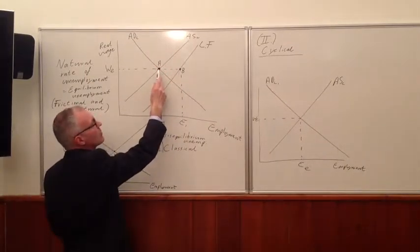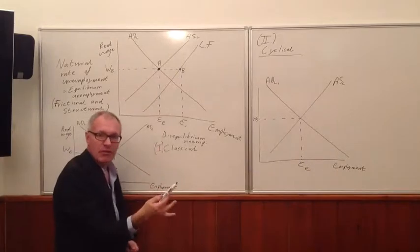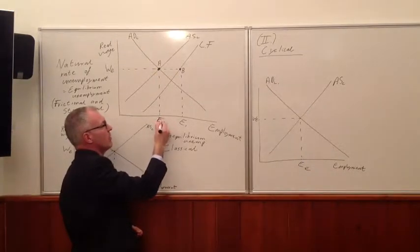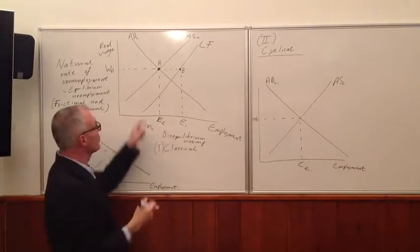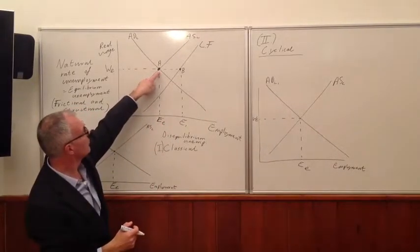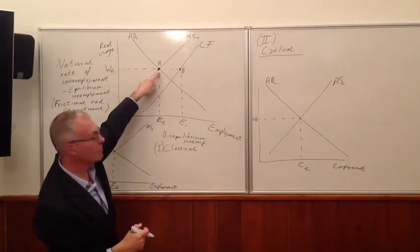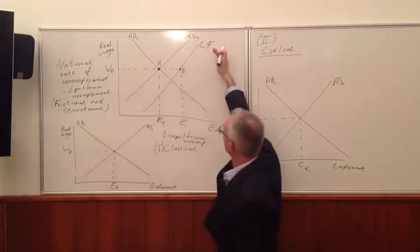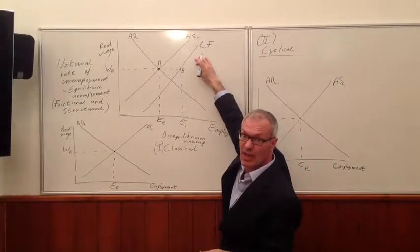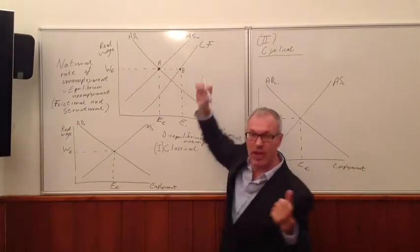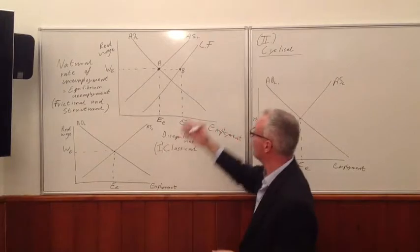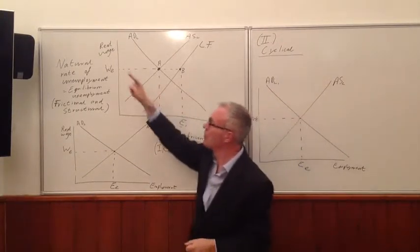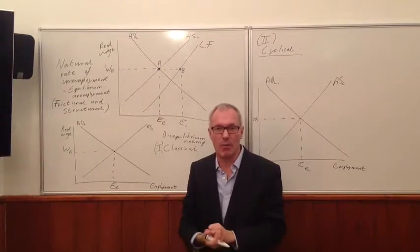Here's the aggregate supply of labour equals the aggregate demand for labour at this point here, and this we have therefore the employment level E-E. And so, this is the equilibrium, hence the term equilibrium unemployment, because here we have the labour force, the people who are in the labour market, who are able to work, are not economically inactive, they're looking for jobs, searching for jobs,